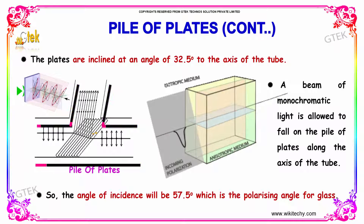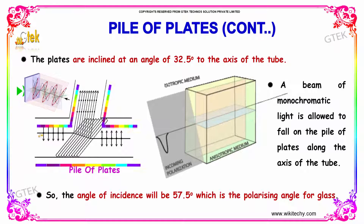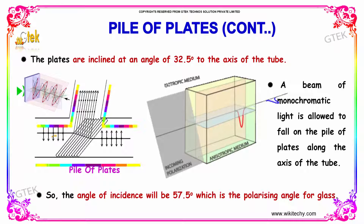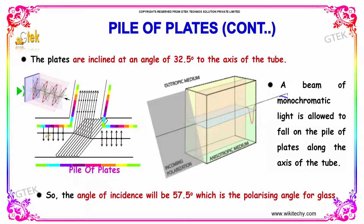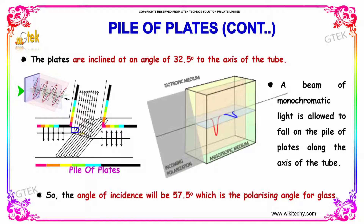A beam of monochromatic light is allowed to fall on the pile of plates along the axis of the tube. So, the angle of incidence will be 57.5 degrees, which is the polarizing angle for the glass.